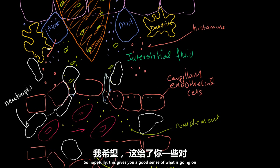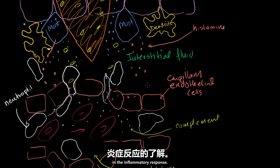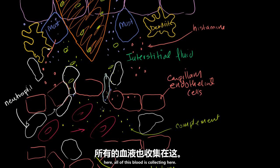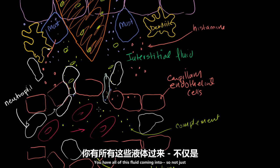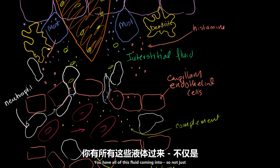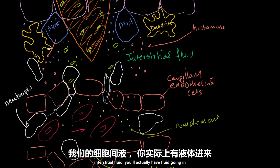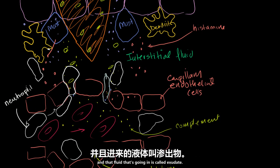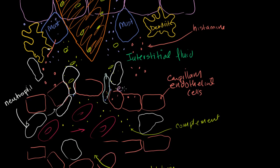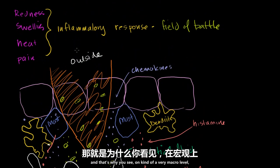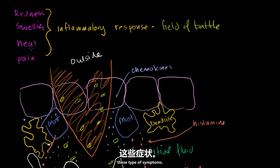Hopefully this gives you a good sense of what is going on in the inflammatory response. As you can imagine, you have all of this fluid and blood collecting here — not just cells going from capillaries into the interstitial fluid, but actual fluid going in as well. That fluid that's going in is called exudate. So this whole thing becomes swollen, red, and engorged — and that's why you see these type of symptoms on a very macro level.